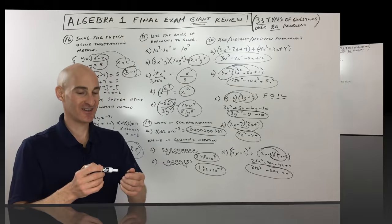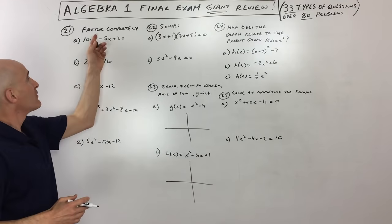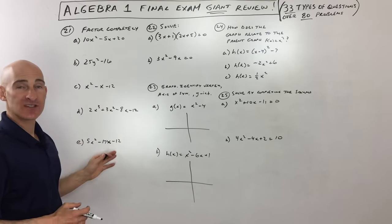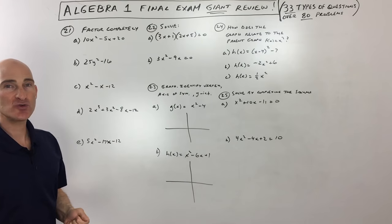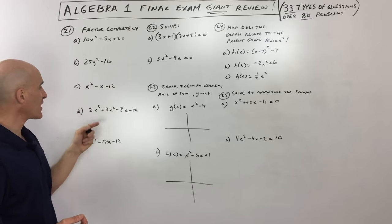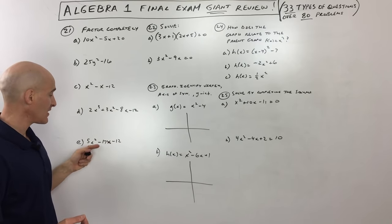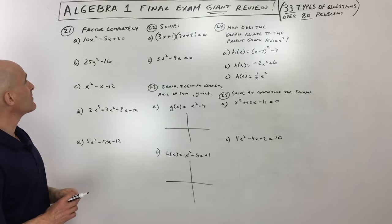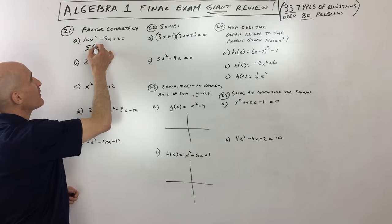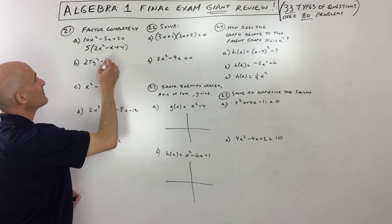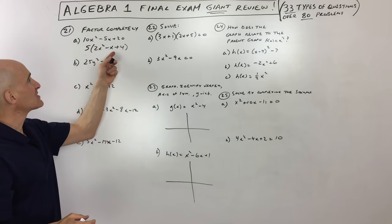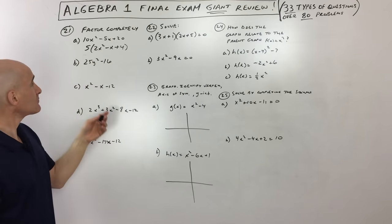Number 21: factor completely. Always check for a greatest common factor first. For 10x squared minus 5x plus 20, factor out 5 to get 5 times 2x squared minus x plus 4 — that trinomial can't be factored further. For 25y squared minus 16, recognize this as a difference of two squares: take square roots of both to get 5y plus 4 times 5y minus 4.